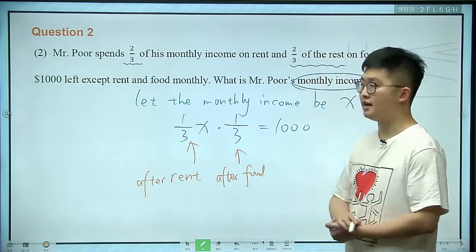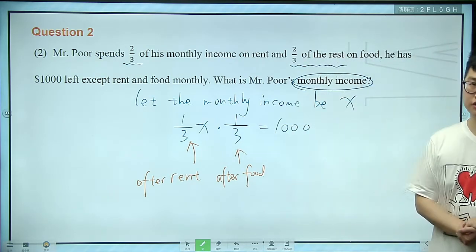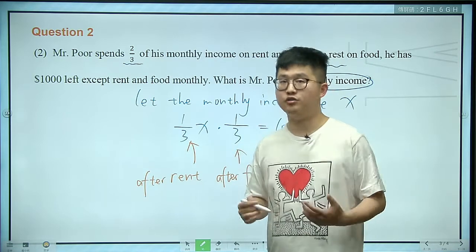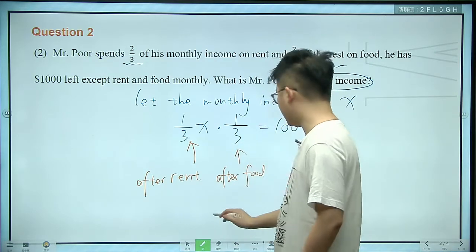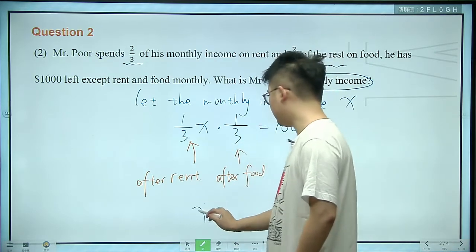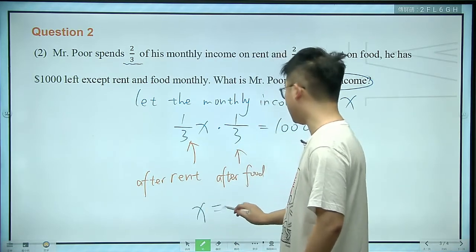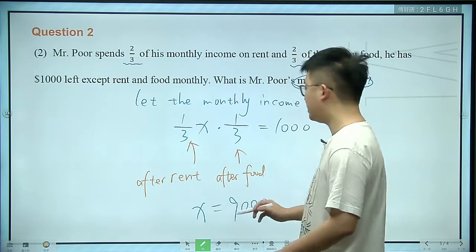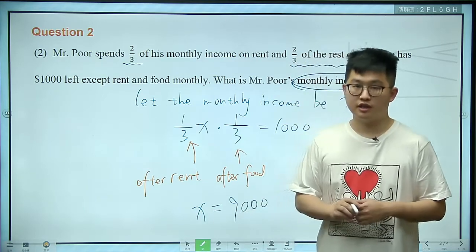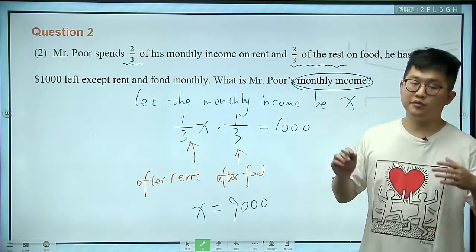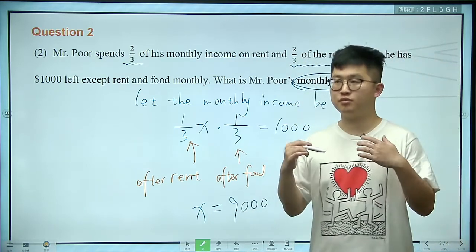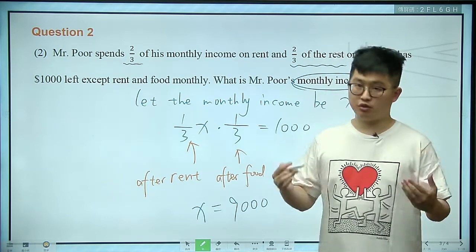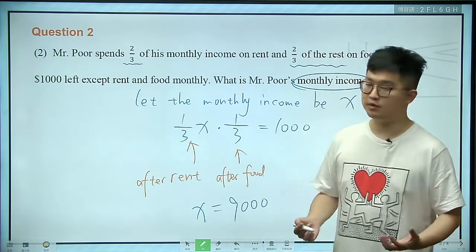What we have left is a thousand dollars. Skipping to the conclusion, x should be 9,000 dollars. This is the standard process for solving a word problem: first let something — usually what we want to know — be x, then set up an equation, and then solve the equation.